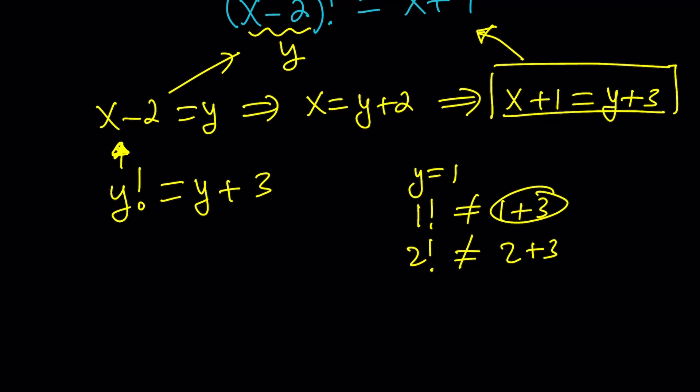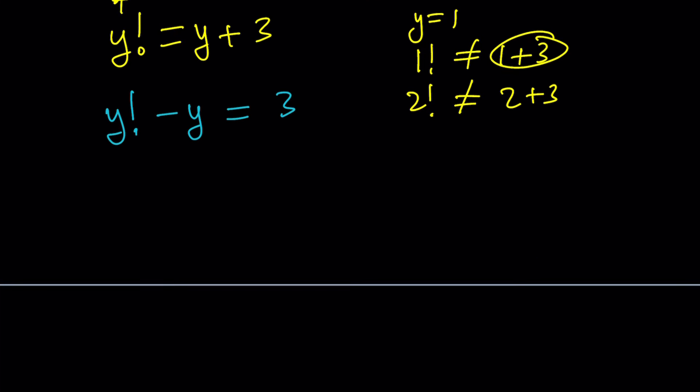But let's still systematize this approach. Subtract y from both sides, and now, you can factor out a y here. So write this as y times y minus 1 factorial minus y equals 3. And then, you can factor out a y, and write this as y times y minus 1 factorial minus 1 equals 3.